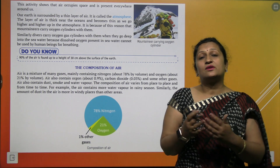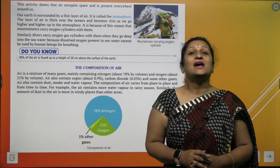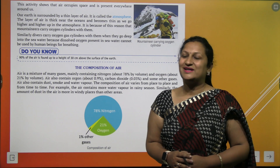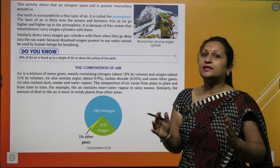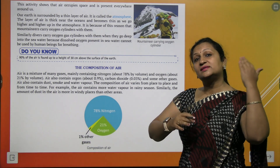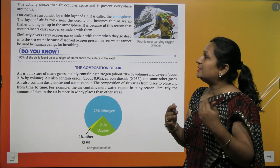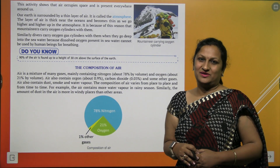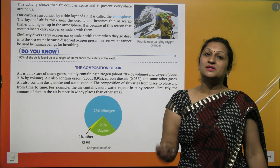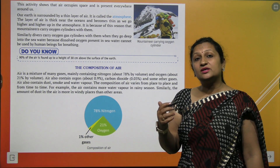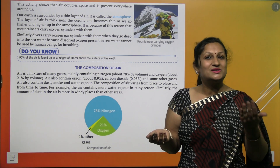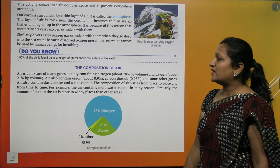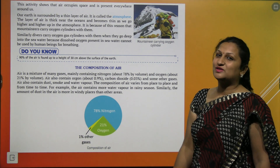Our earth is also surrounded by a blanket of air called the atmosphere. The envelope of air that surrounds our earth is called the atmosphere. The layer of air is thick near the oceans, and as we go to higher altitudes, the air gets thinner. Isi liye jab mountaineers oopar jaate hain, they carry oxygen cylinders. Sea divers ko bhi apne saath oxygen cylinder leke jaana padta hai because water ke andar jo oxygen dissolved hai, use aap directly use nahi kar sakte. 90% of the air is found up to a height of 30 km above the surface of the earth.